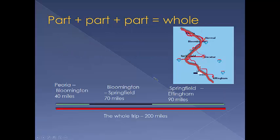Our mileage example: Peoria to Bloomington, 40 miles. The second part of our trip, 70 miles, and then from Springfield to Effingham, 90 miles. We add to find the whole trip, 200 miles.